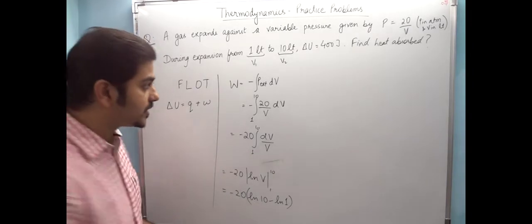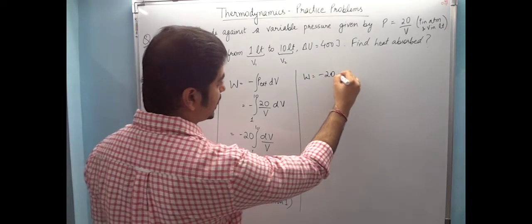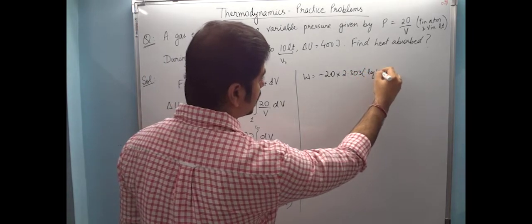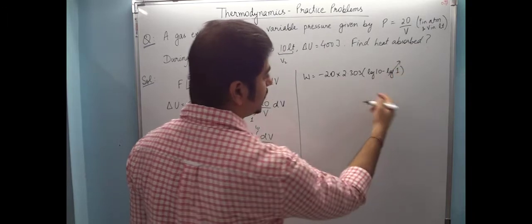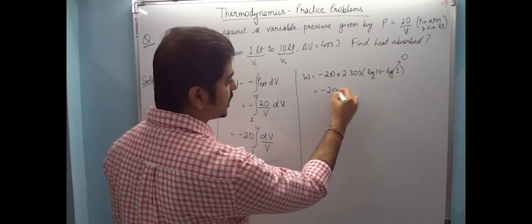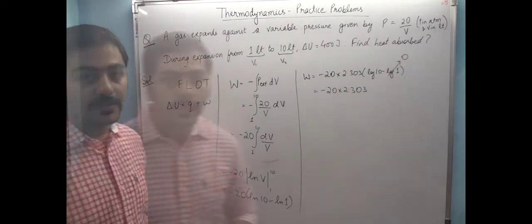Let's convert natural log to common log. The conversion factor is 2.303. So effectively work done is minus 20 into 2.303 times (log 10 minus log 1). Log 1 is 0, log 10 is 1, so effectively minus 20 into 2.303.